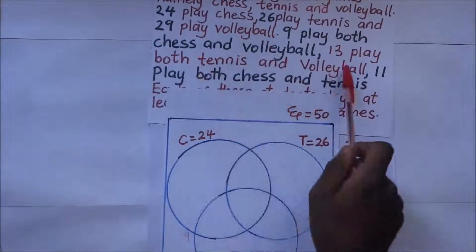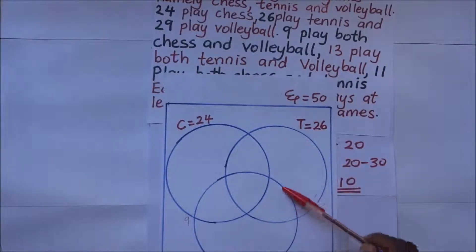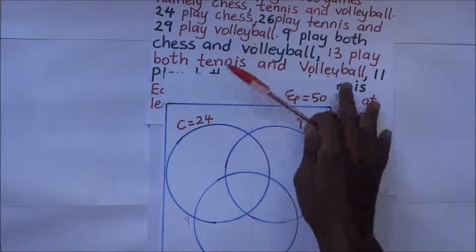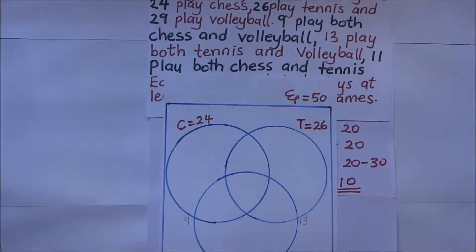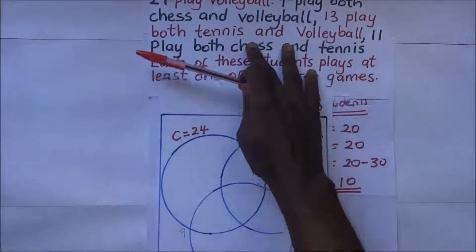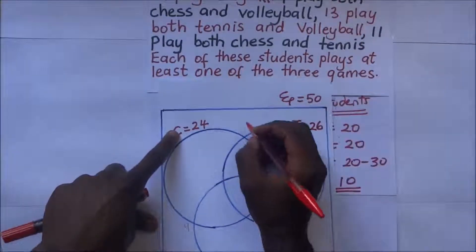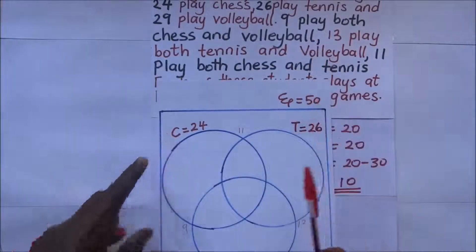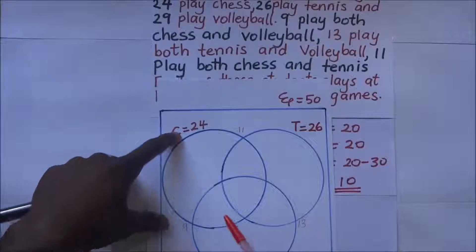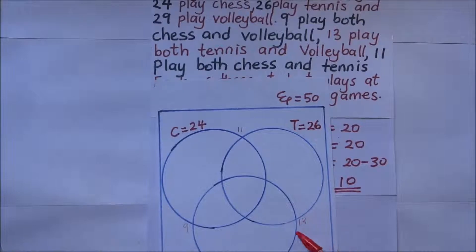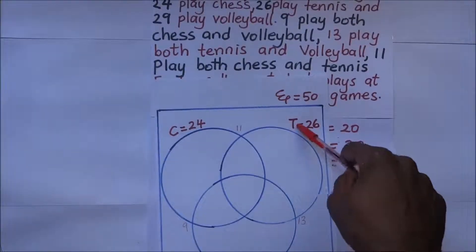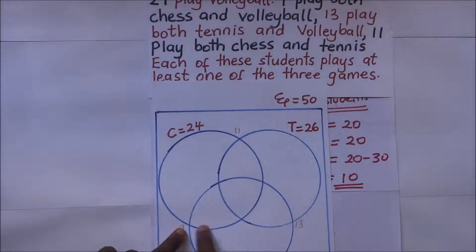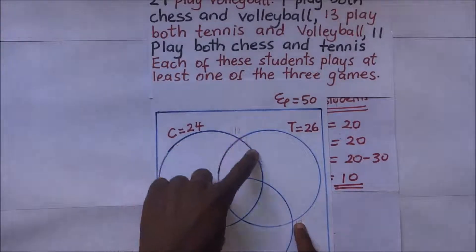13 play both tennis and volleyball — same situation, so we place 13 there temporarily. 11 play both chess and tennis, so we place 11 there. If the question had said 'only', those numbers would go in the exclusive overlap regions. Since these figures represent entire intersection regions — 9 for chess and volleyball, 13 for tennis and volleyball, 11 for chess and tennis — we need to account for the all-three-games region.